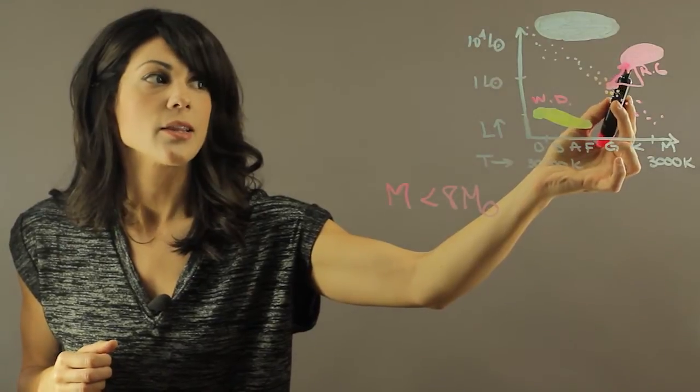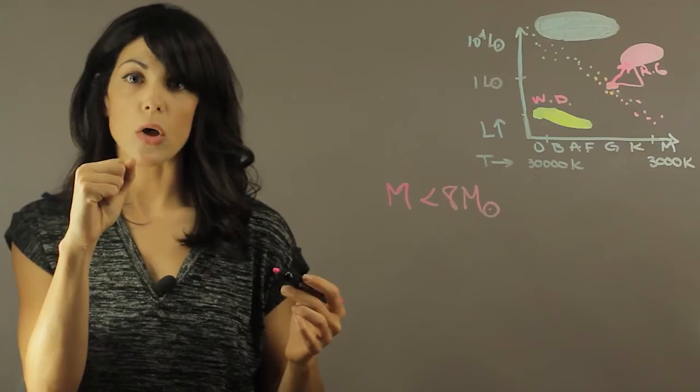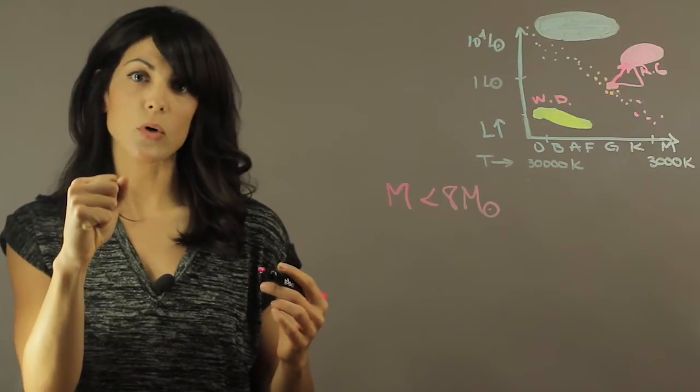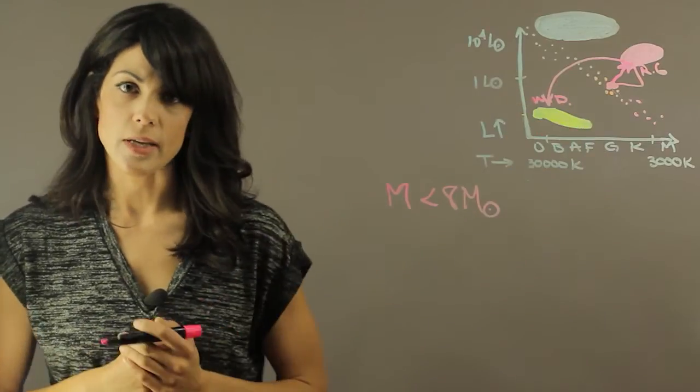So what will happen is that the core is very hot but because it's so small, because now you only have the core left over, it's not very bright. So then you move down to the white dwarf stage.